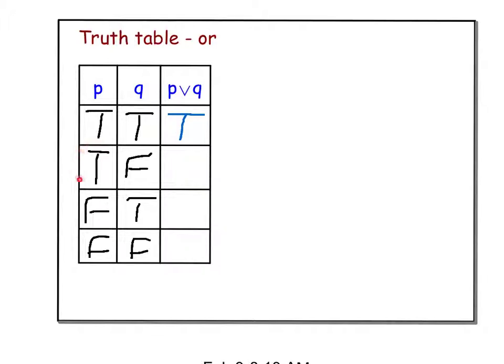In the second row, I have P true and Q is false. Since one of them is true, I'm going to say that the OR is true.